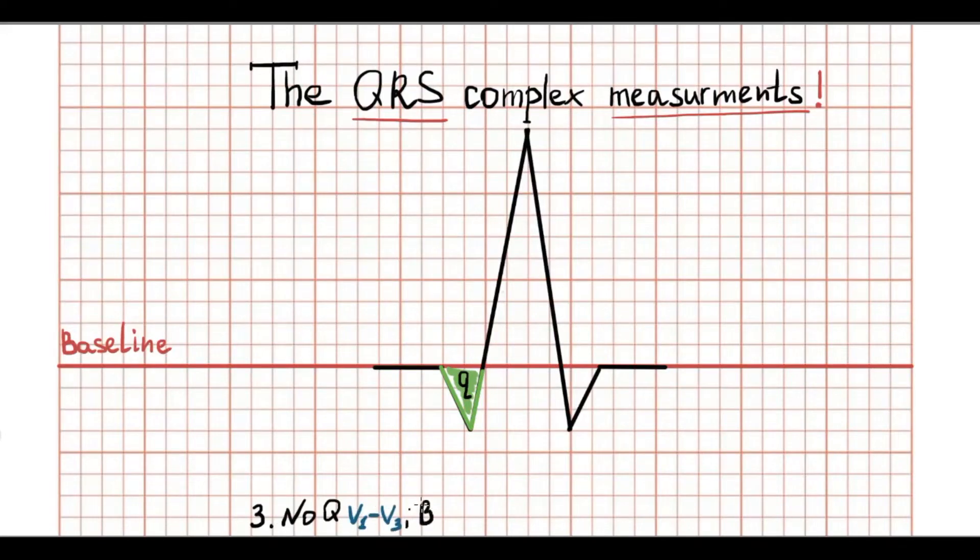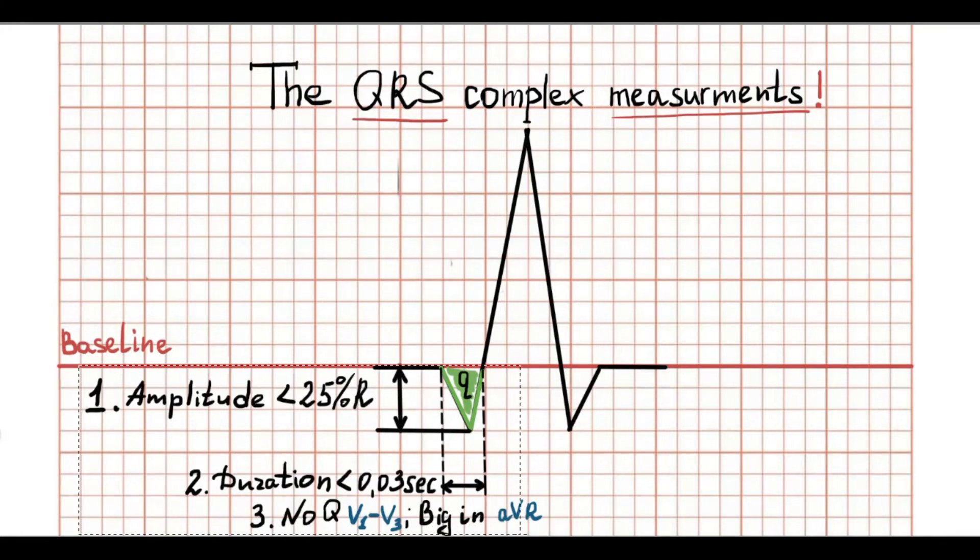As an exception, only AVR lead can contain big Q wave. This occurs because of the opposite direction of AVR axis. So all ECG waves in AVR look like inverted waves of second standard leads. According to this, Q wave can be deep and prominent in AVR.